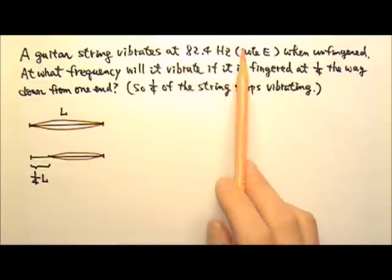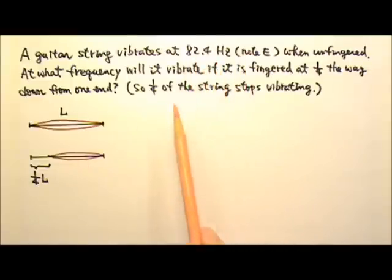So this 82.4 Hz is the fundamental frequency when the string vibrates in one loop. When fingered one-fourth the way down, the vibrating part of the string gets shorter. Only three-fourths of the string vibrates now.